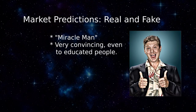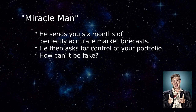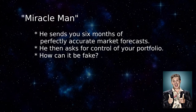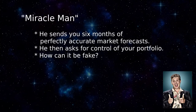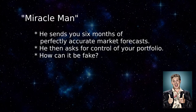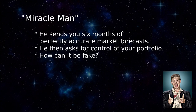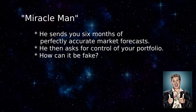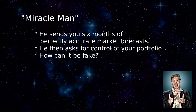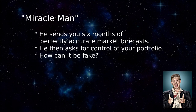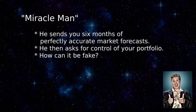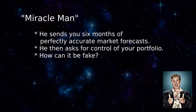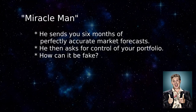On May 1st, you receive an email from Miracleman. The message makes a firm prediction that the market will either rise or fall in the next month — not about a few stocks, but the entire market. During the month of May, you notice that the market either rose or fell exactly as Miracleman predicted in advance. On June 1st, you get another Miracleman email with another prediction.